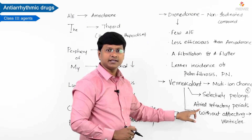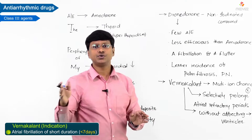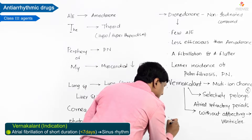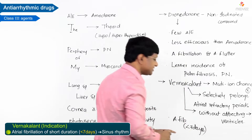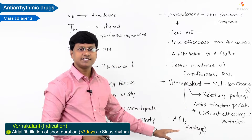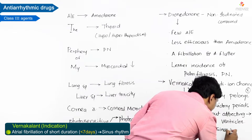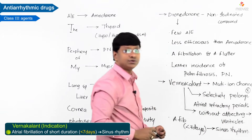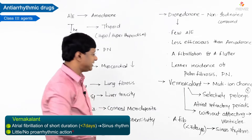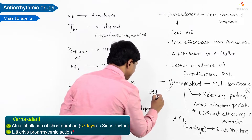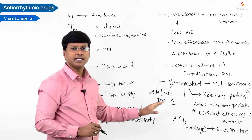Because vernakalant selectively prolongs the atrial refractory period, it is indicated for converting atrial fibrillation of short duration — meaning atrial fibrillation of less than seven days — to sinus rhythm. An important point regarding vernakalant is that it has little or no proarrhythmic action.